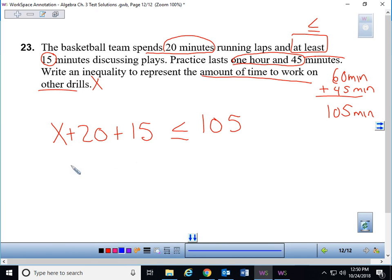So we have x plus 35 less than or equal to 105. Getting x by itself. Undo addition with subtraction. Subtract 35 from both sides. This gives me x less than or equal to 70 or 70 minutes is what I have to use for other drills.